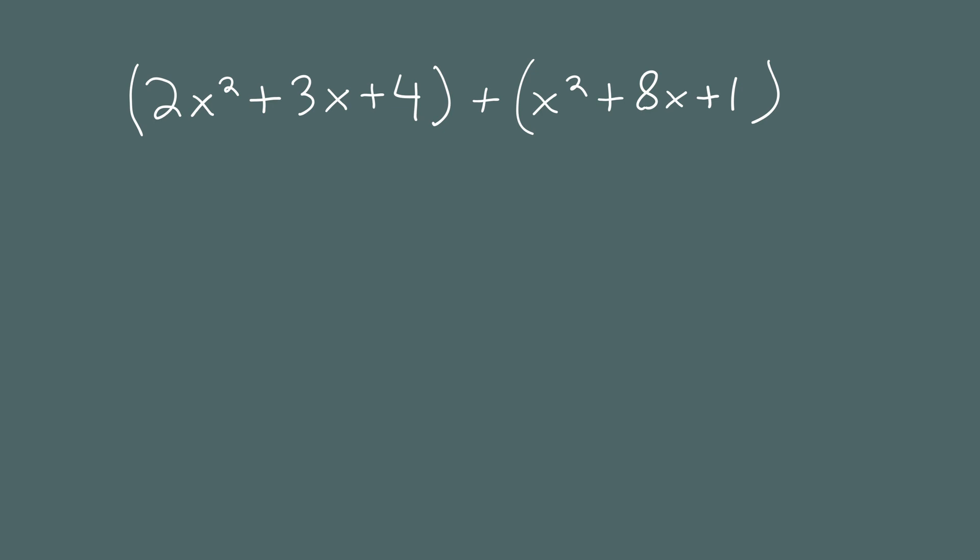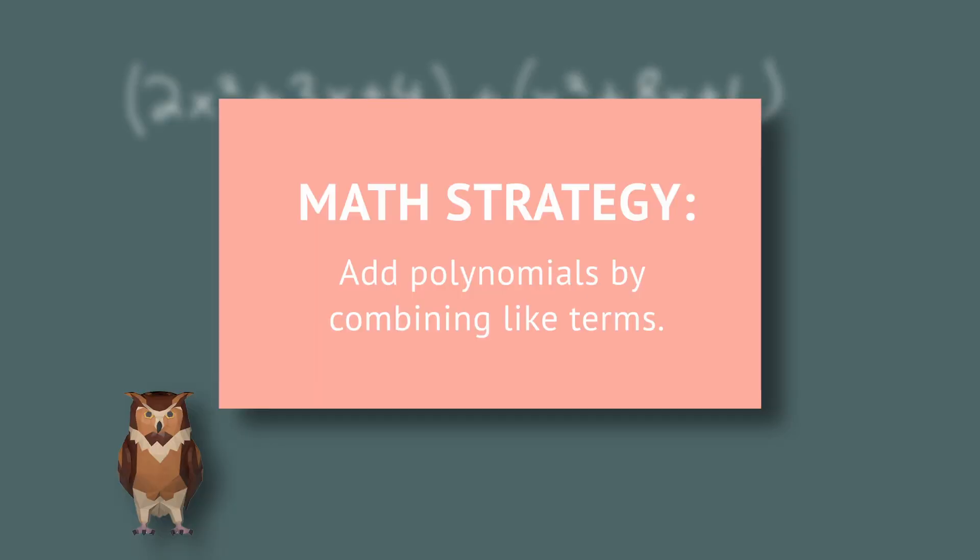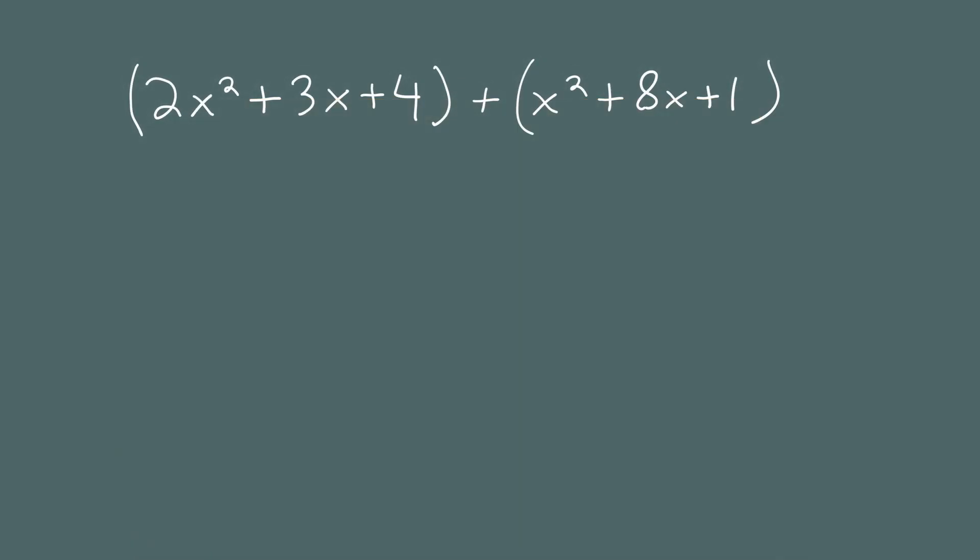The main strategy when adding polynomials is to combine like terms. We'll show you several ways and you can choose which method you prefer. There are six terms, three in the first polynomial and three in the second.